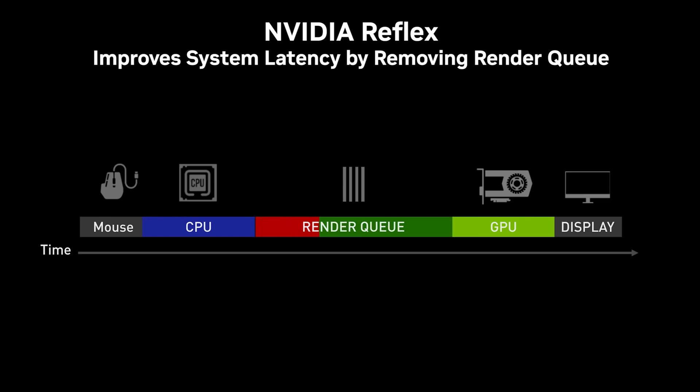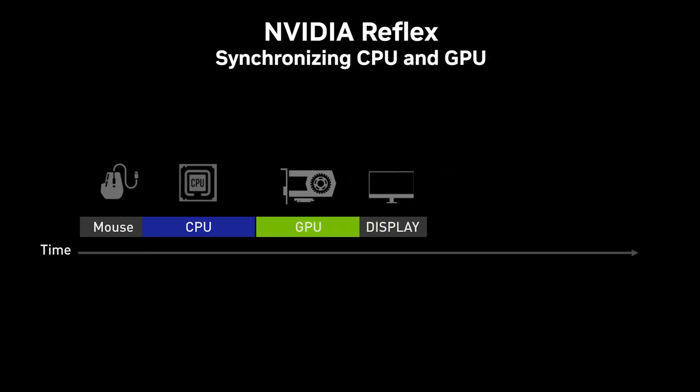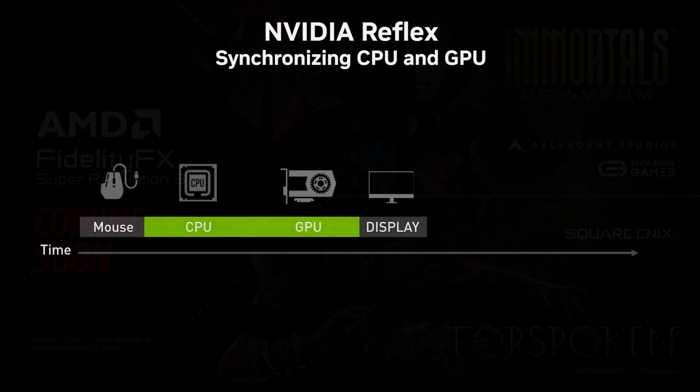Nvidia has their Reflex technology which works similarly and is available in a wide variety of games like COD, Fortnite, and most recently Counter-Strike 2.